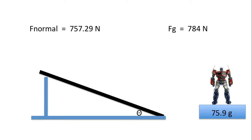What does this imply? Well, if we have an object and we weigh its mass on a balance, on a flat surface, let's say that object is 75.9 grams. Well, on a hill, it's going to weigh less.